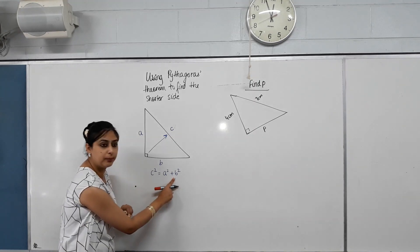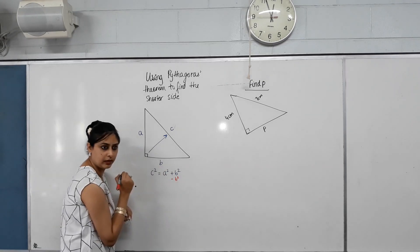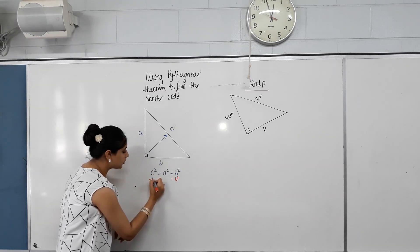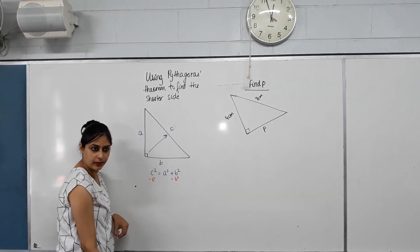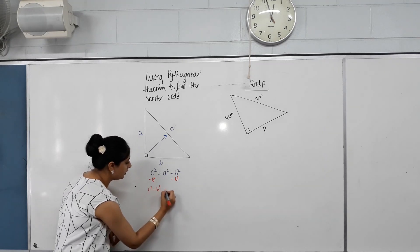Now, we've done rearranging equations, right? So if I need to bring B squared to the other side, can I take away B squared from this side? Yes. I must do the same to the other. So can I take away B squared from both sides? Yes. What do we get? C squared take away B squared equals A squared.